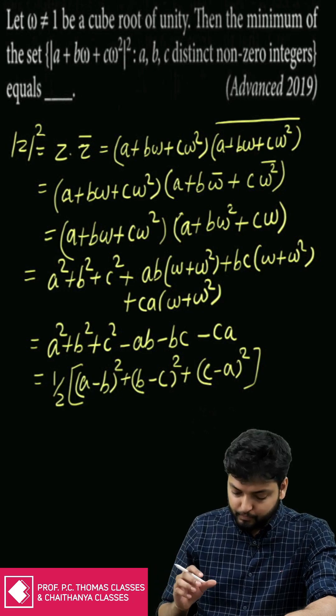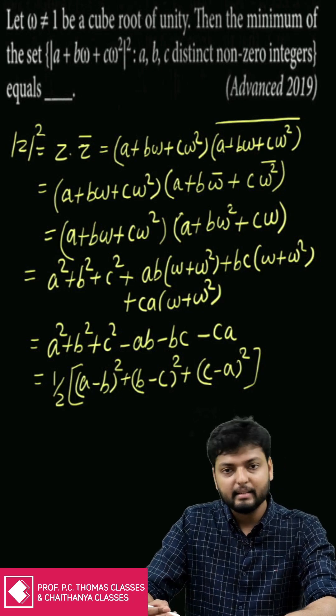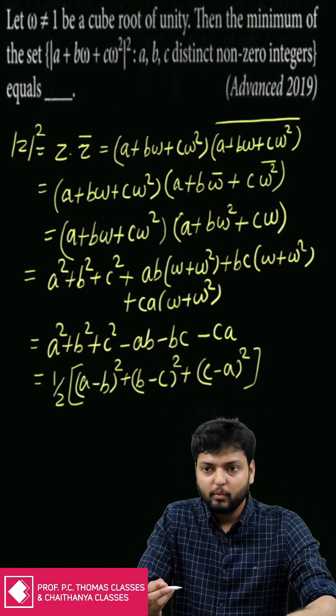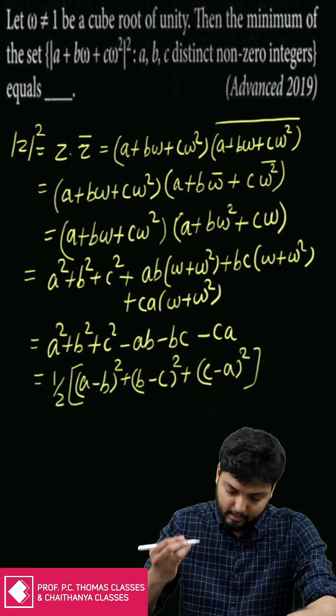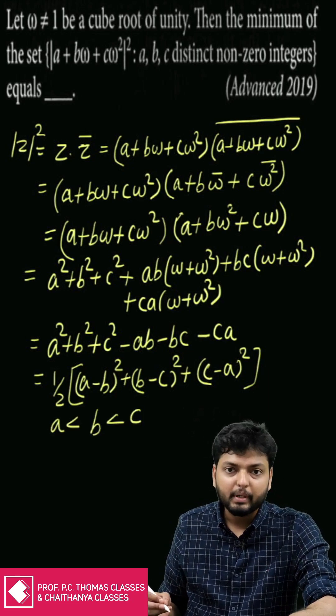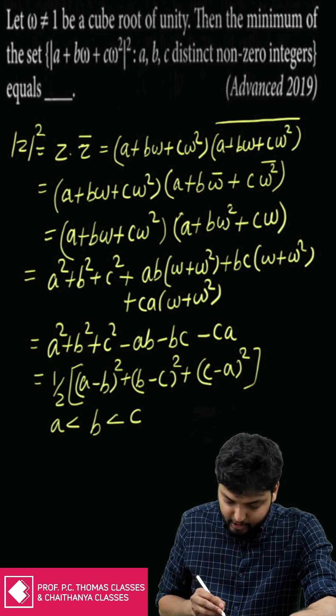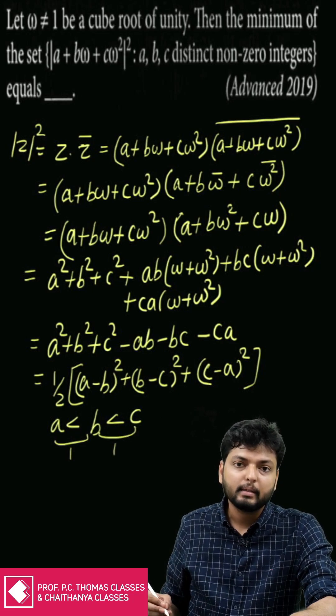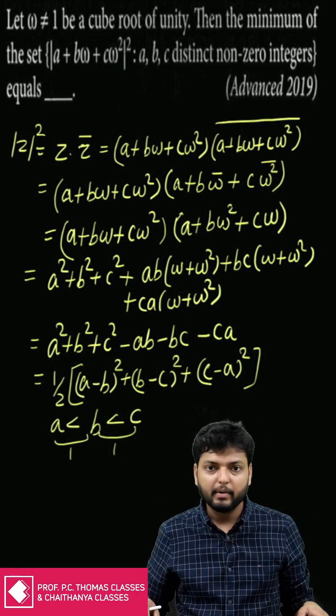To minimize each of these squares, since they are distinct integers, the difference is going to be at least one. Without loss of generality I can assume a < b < c. So I can choose the difference between a and b to be one and b and c to be one. This is the best possible scenario.